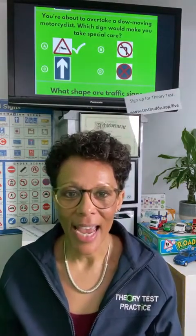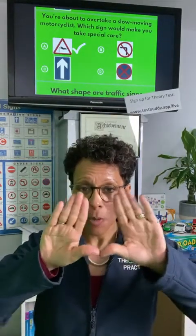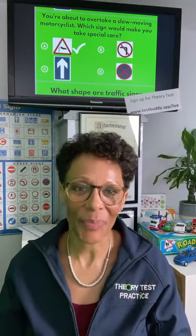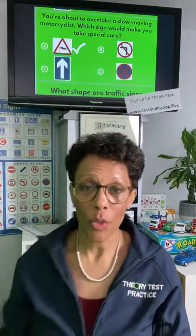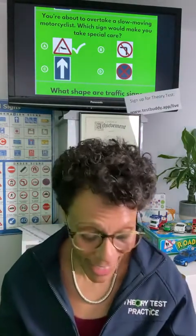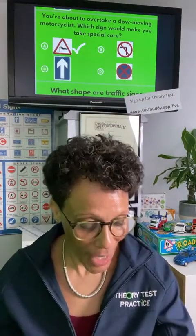The answer is A. A is a triangle sign, and remember — triangle-shaped signs are warning signs. If you make a triangle with your hands and open it out, you can see the shape of a W for warning. Sign A is warning you of side wind; there's a flag indicating it could be quite windy. If you're overtaking a motorcyclist, that wind could hit them and affect their riding. So the answer is A.